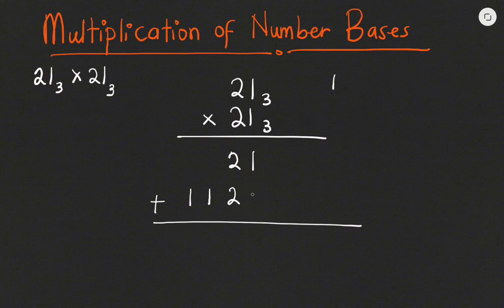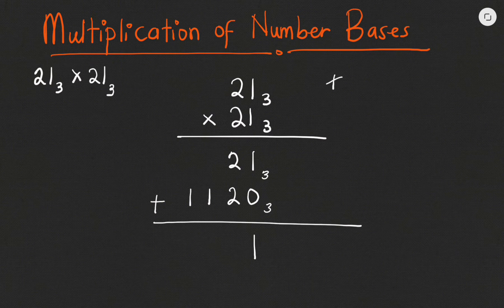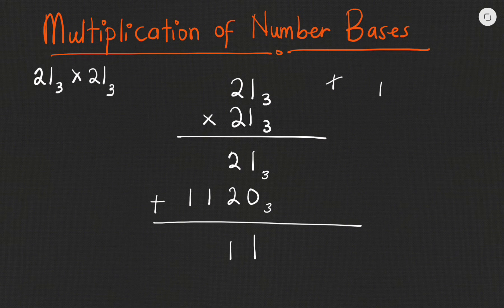We have 1 plus nothing at the bottom, so that's zero — giving us 1. Then 2 plus 2 is 4. Because we are dealing with base 3 we cannot write 4, so we ask how many times 3 goes into 4 — it goes once, leaving a remainder of 1. We write the remainder and carry that 1. Now we have 1 here, but we carried 1 earlier, so 1 plus 1 becomes 2.